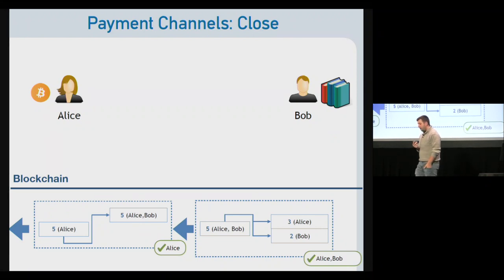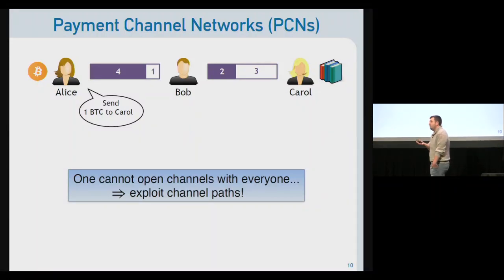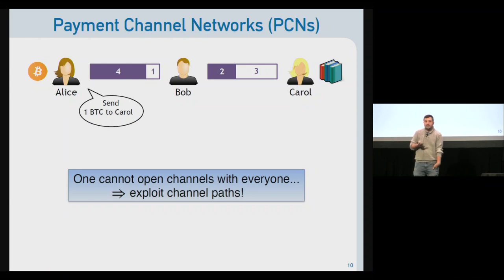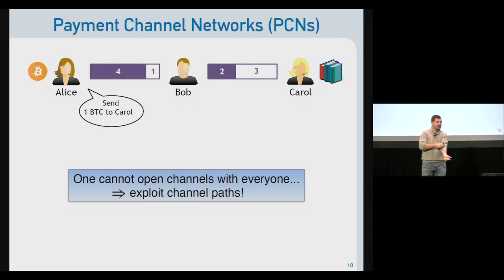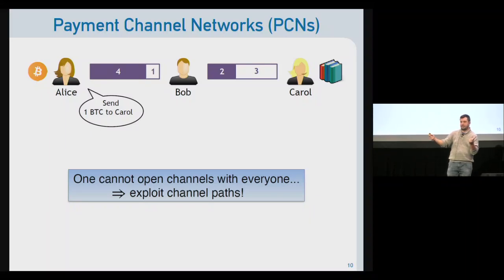This protocol only allows two users to pay each other. What we would like is for Alice to pay everybody. She could open payment channels to everyone, but this is costly because she must lock coins in every channel. Instead, in practice, Alice relies on a path of open channels between herself and the intended receiver.